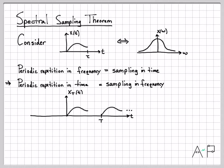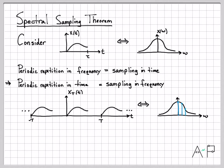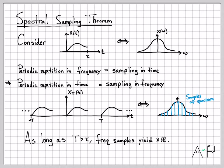Let's take our original x(t) and create a periodic waveform by repeating this part of the signal every capital T units of time. That gives us the signal x_T(t), which is now periodic and repeats every T units of time. By doing this periodic repetition in time, we get samples of the original spectrum — the blue samples that sample the original spectrum. This works as long as we're careful: the signal had a width of tau, so as long as the period T is greater than tau, there are no collisions, no aliasing, and we get samples that accurately describe the original spectrum.